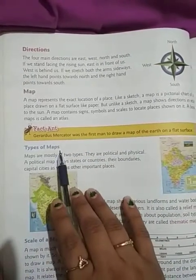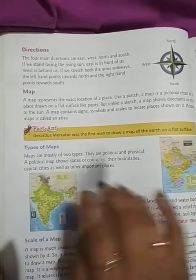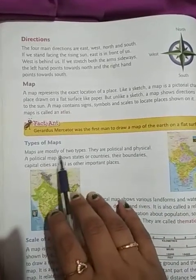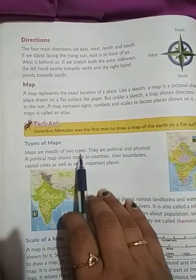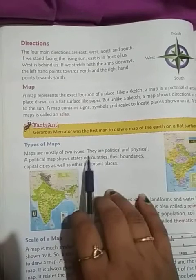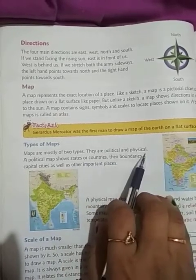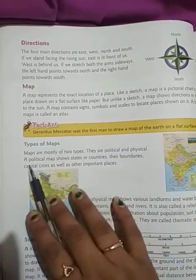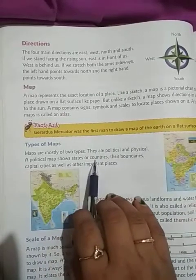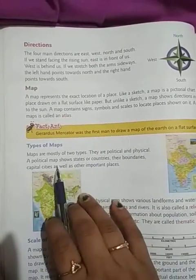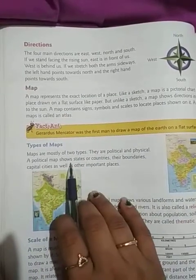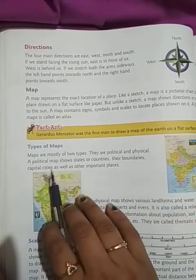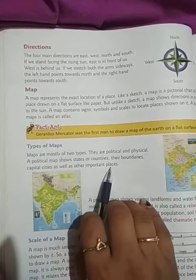Next is types of maps. Maps ke kitne-kitne types hain? Maps are mostly of two types. They are political and physical. A political map shows states or countries, their boundaries, capital city as well as other important places.